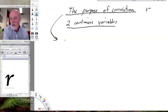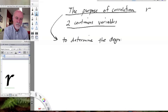So what is the purpose of correlation? I'm actually making two separate videos on correlation and regression because I want to dissociate them. But what correlation does is, the purpose of correlation is to determine the degree of association between two continuous variables.